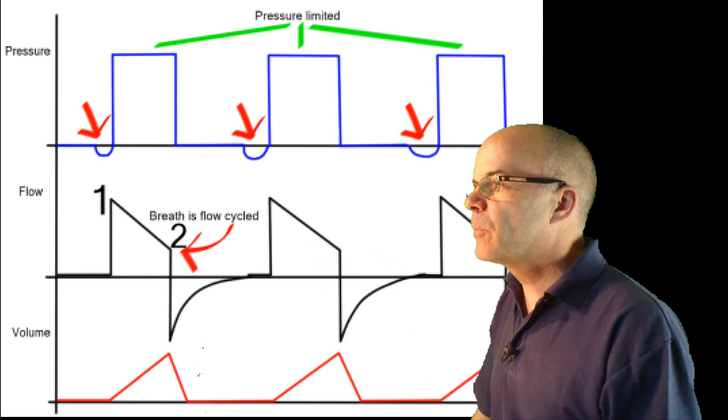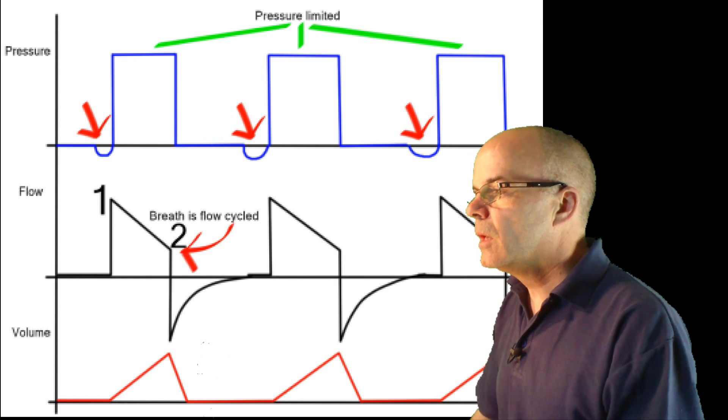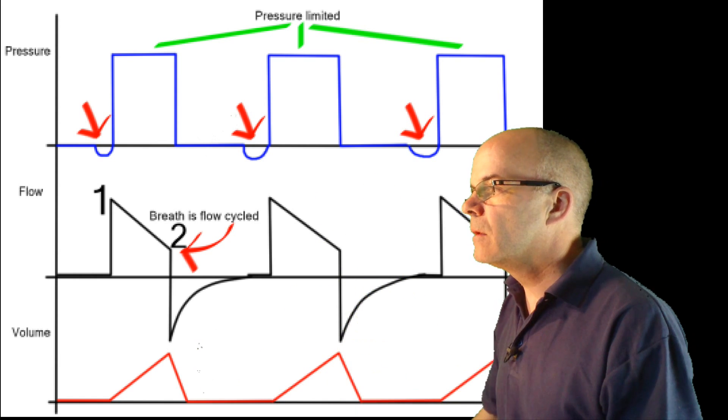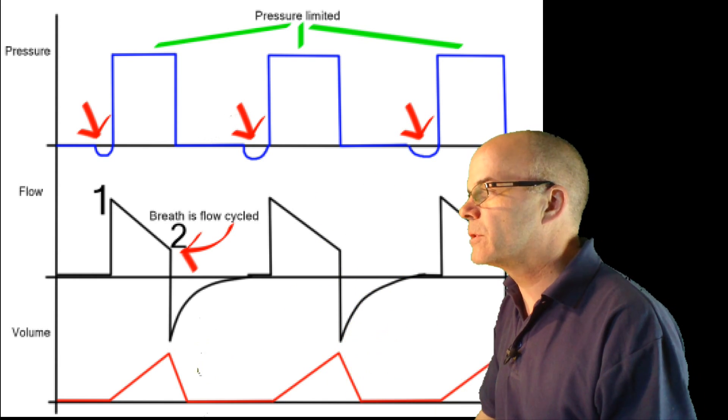This is the information from a pressure-supported breath. We have the pressure generated at the top, the flow generated in the middle, and the subsequent volume at the bottom.